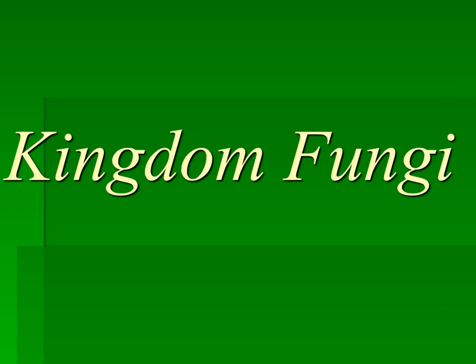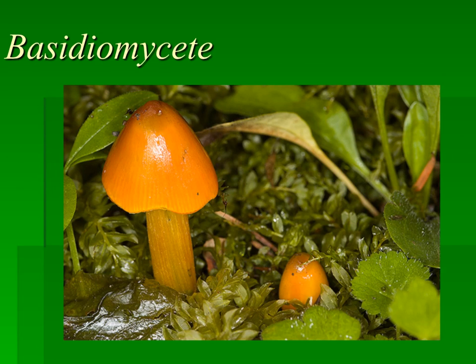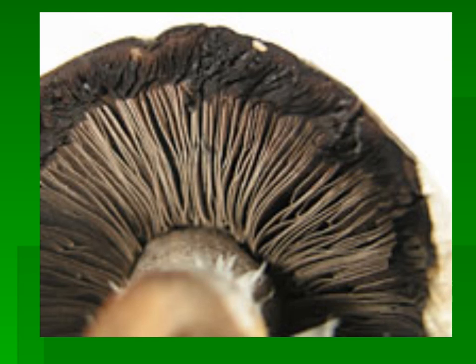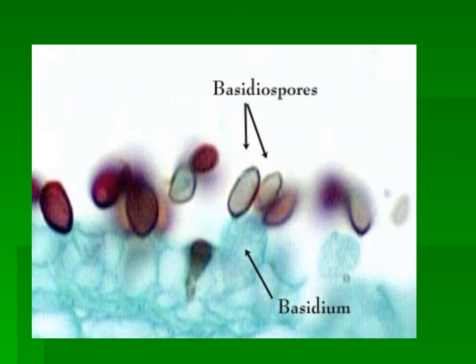In addition to the plant kingdom, this lab practical will also cover the fungi kingdom. Here we have basidiomycetes, or a typical mushroom, where we can see the stalk and the cap. Looking on the underside of the cap, we can see the gills. Here we've enlarged those gills and looked at them under the microscope. We have a club-shaped structure called a basidium, and at the end we have four spores called basidiospores. This is basidiomycetes because of the club-shaped structure that holds the spores.